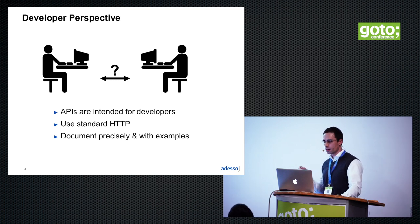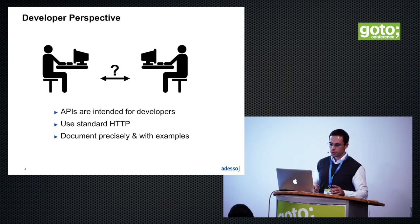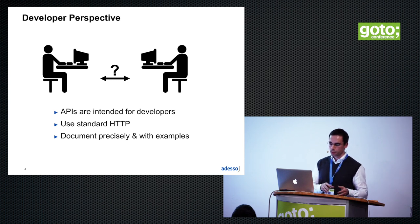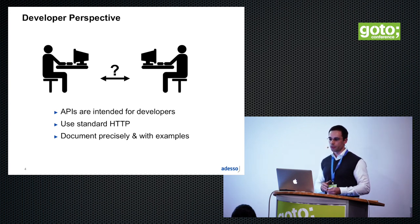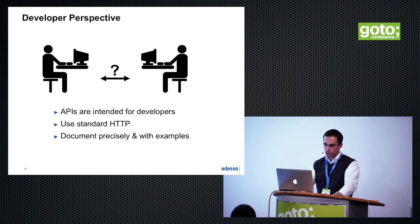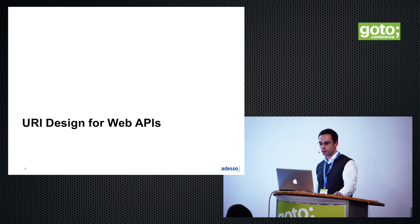APIs are intended for developers, not for machines — it is for people. If you are using standard HTTP on the web and you are compliant to the REST principles, it helps a lot. But it is also important to provide documentation that is accurate, has enough information, and brings examples, because developers learn very well with examples. I would like to take this developer perspective and come to the next topic, which is URI design.